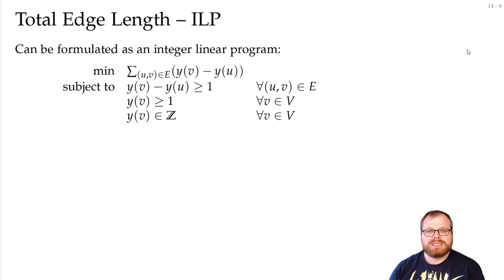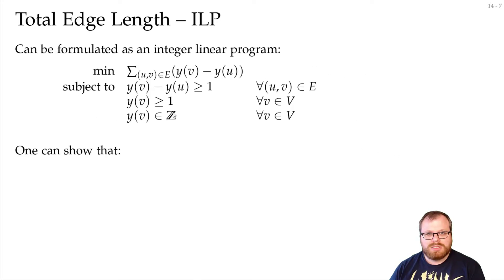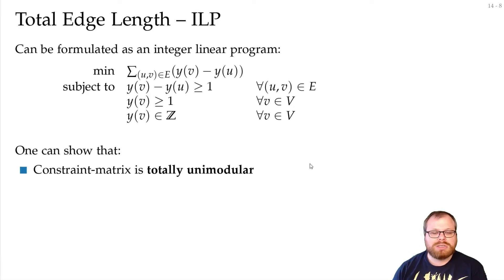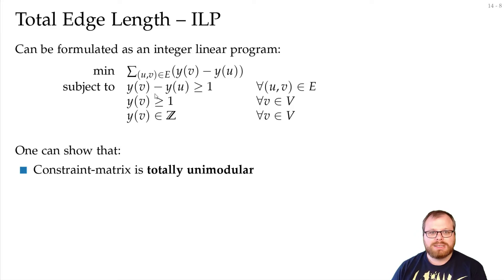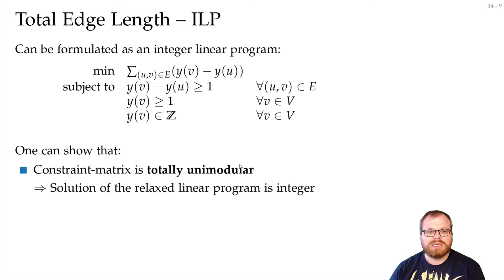In general, it is NP-complete to solve an integer linear program optimally, but this is a very special one. One can show that the constraint matrix is totally unimodular. Recalling the flow algorithm, we have a system of linear equations, and similarly here. If we can show the matrix is totally unimodular, then the solution of the relaxed linear program is already integer.